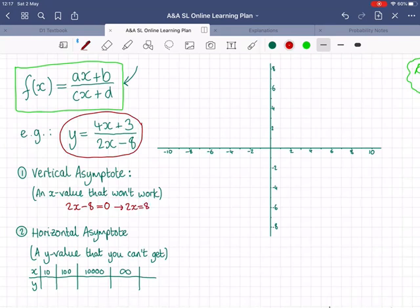And solve 2x minus, 2x equals 8. So x equals 4. Or more accurately, x cannot equal 4. So our graph will never cross that line, and we'll never touch that line, but we'll get infinitely close to it in both directions.